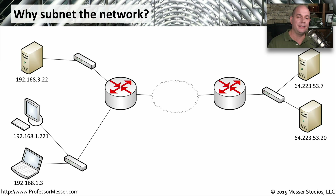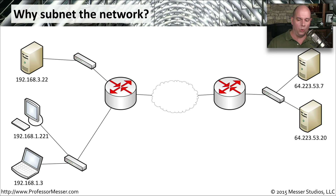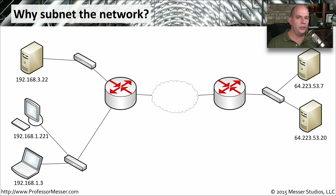Instead, we know where the next step is to communicate with you with our routing, and we let the routers handle the rest of that communication. There would also be cost limitations — you would have to build some amazing technologies to be able to understand where every single person is with every IP address on the entire worldwide internet. And of course, there are security concerns. We may want to have a network that's private to us and not have it available for others to communicate with. Even the largest networks in the world still subnet into smaller pieces for security and manageability.